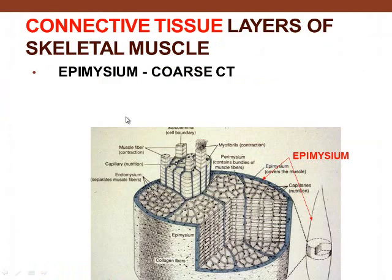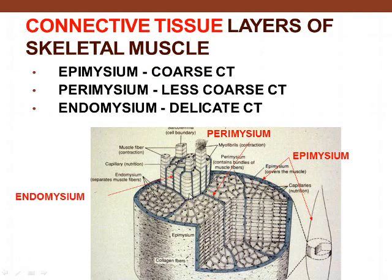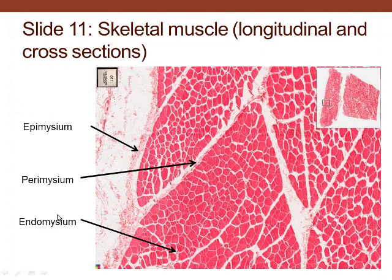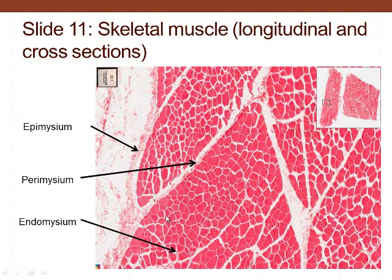The different connective tissue layers: outside the muscle is the epimysium. Then you have divisions inside — that's the perimysium. Around individual muscle fibers is the endomysium. Looking again at slide 11, the epimysium is the connective tissue outside, the perimysium is the major connective tissue in through there, and the endomysium is the connective tissue that houses the blood vessels surrounding individual muscle fibers.